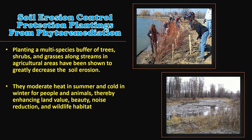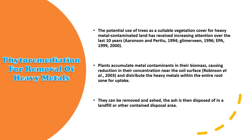For soil erosion control, planting multiple species buffers of trees, shrubs, and grasses along streams in agricultural areas has been shown to greatly decrease soil erosion. These plantings also moderate heat in summer and cold in winter for people and animals, thereby enhancing land value, beauty, noise reduction, and wildlife habitat.